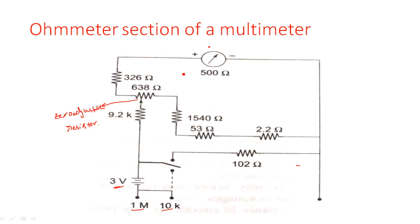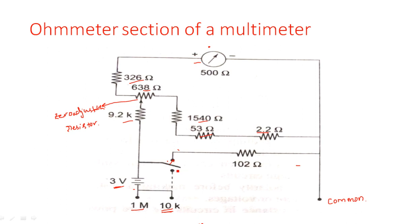The common path remains the same: meter, 326 ohms, 638 ohms, 1540 ohms, 53 ohms, and 2.2 ohms. Additionally, a 9.2 kilo-ohm potentiometer and a 3-volt battery with a switch are included. Whether you select the 1 mega-ohm range or the 10 kilo-ohm range is decided by the switch — this is the ohmmeter section.